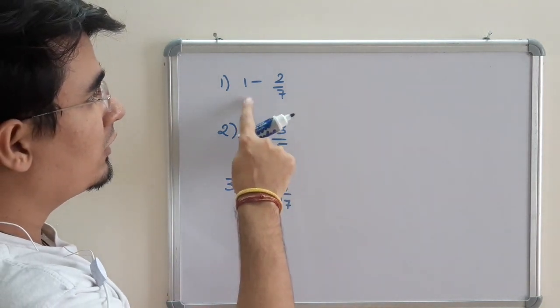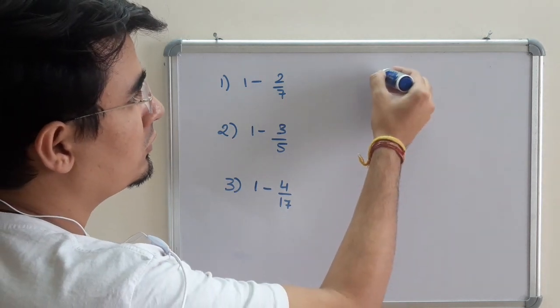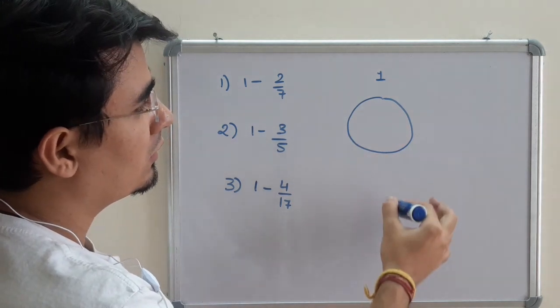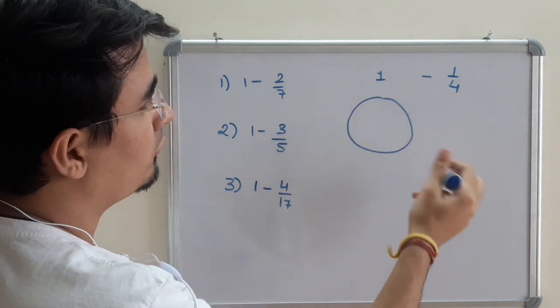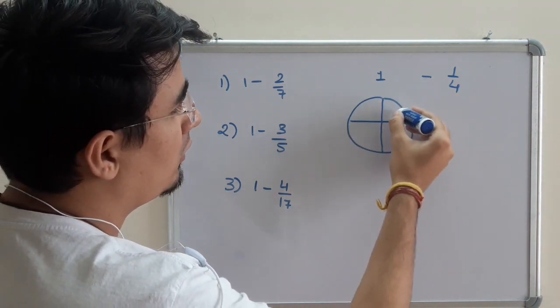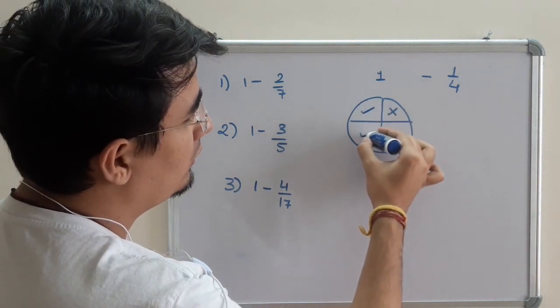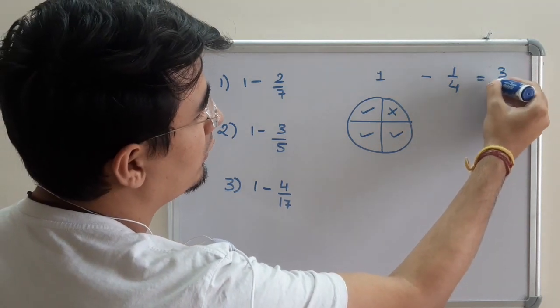So this is 1 minus a proper fraction. Let us take a simple example. Suppose this is a 1 - 1 means a whole pizza or a circle or anything. If I am subtracting 1 by 4 out of it, 1 minus 1 by 4, that means I am giving away 1 part of it. So I will be remaining with 3 parts. So the answer would be 3 by 4.